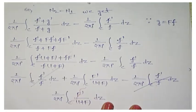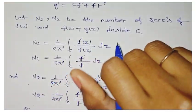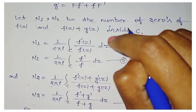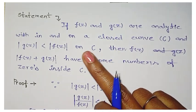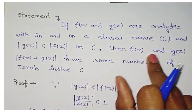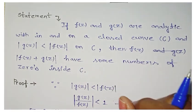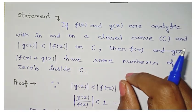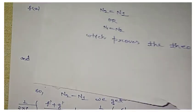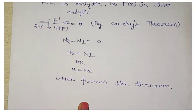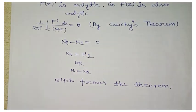This proves the theorem. We had let n1 and n2 be the number of zeros of f(z) and f(z) + g(z) inside C. We needed to prove that f(z) and f(z) + g(z) have the same number of zeros inside C — and that is exactly what we have proved here. For a clearer picture, check my Telegram channel 'Mathematics Inquiry'. Take care everyone, see you in the next video.